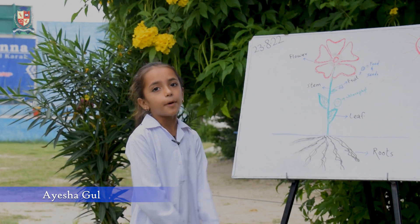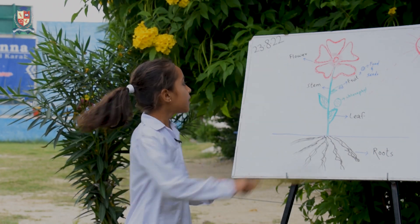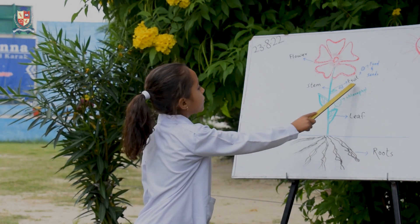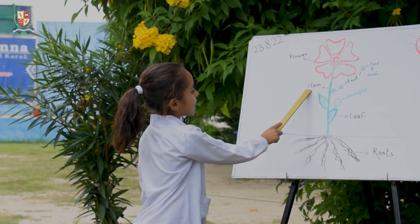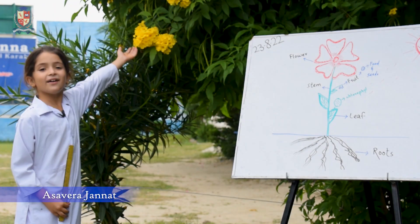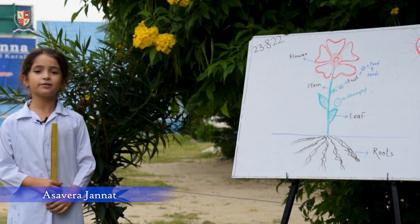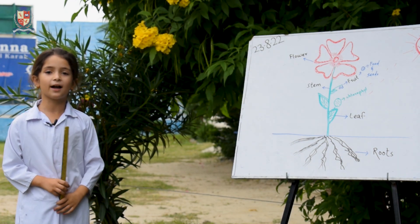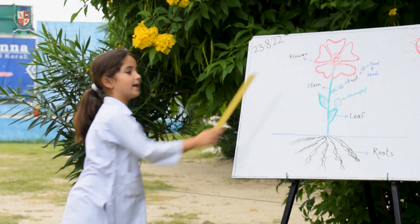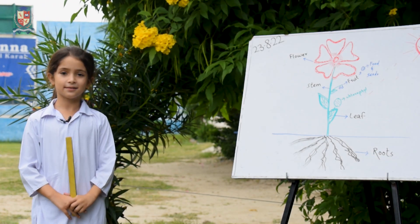The important parts of plants are flower, leaf, fruit, stem and roots. These are flowers — it is the most beautiful part of a plant. Flowers make seeds and attract us.